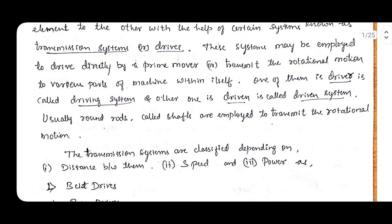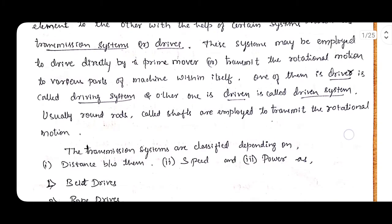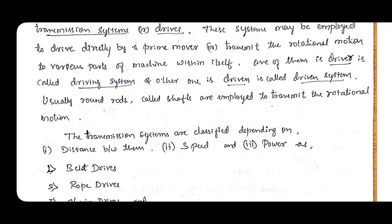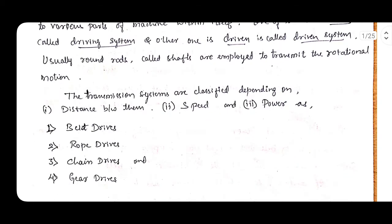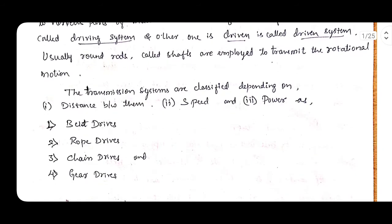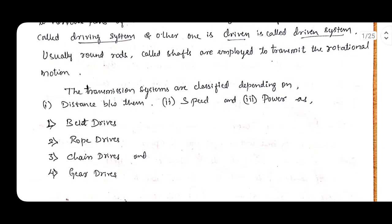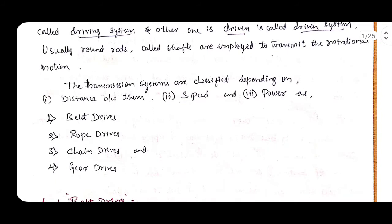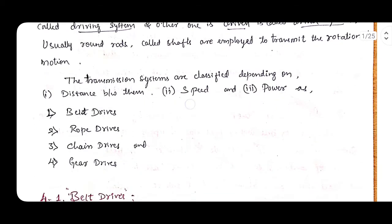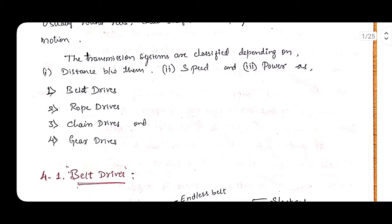Usually round rods called shafts are employed to transmit the rotational motion. Round shafts are the main axial elements considered for the transmission of power. The transmission systems are classified depending upon the distance between them, speed, and power — minimum distance, maximum distance, various speeds, and the amount of power transmission.